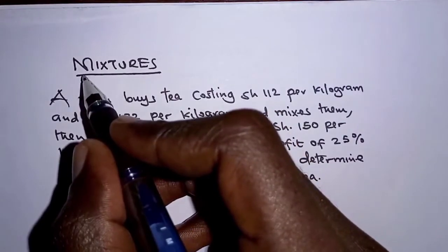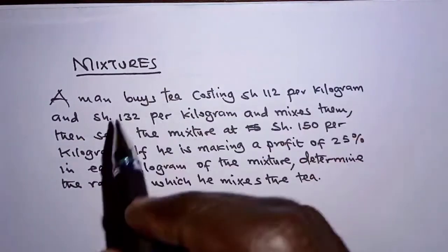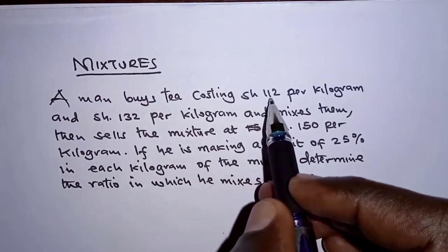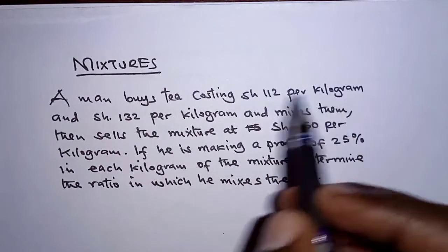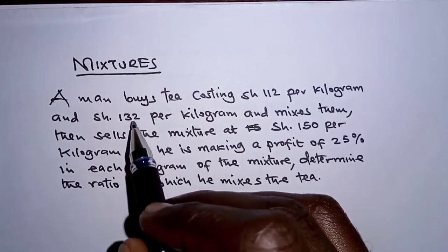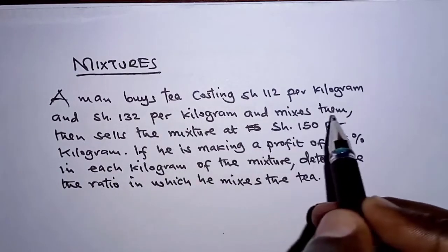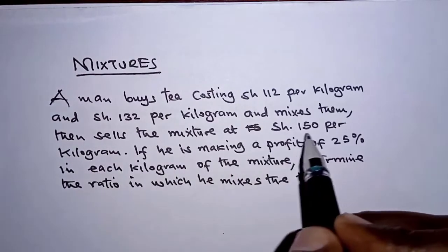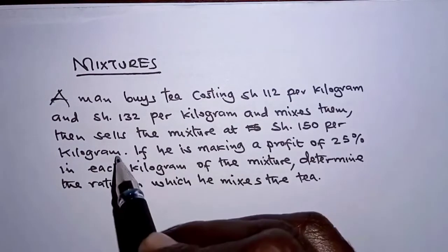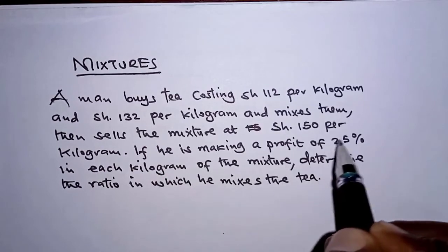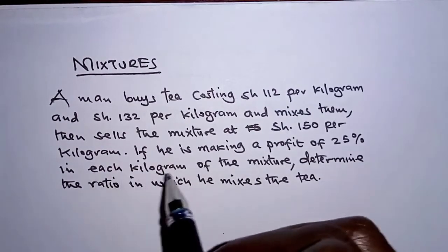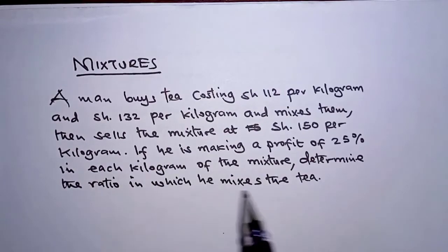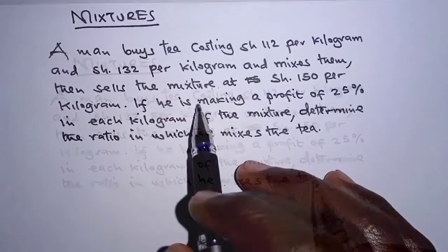In today's question we are going to discuss mixtures. A man buys tea costing 112 shillings per kilogram and 132 shillings per kilogram and mixes them, then sells the mixture at 150 shillings per kilogram. If he is making a profit of 25 percent on each kilogram of the mixture, determine the ratio in which he mixes the tea.